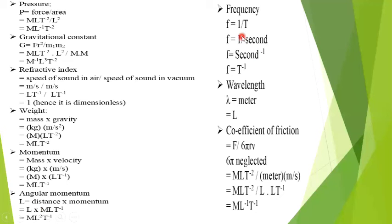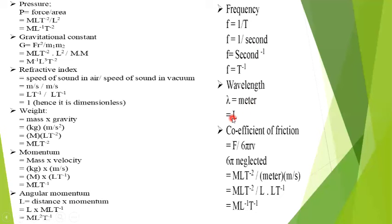We work on frequency. The frequency formula is 1 upon time. Time unit is second; taking its power gives T⁻¹. The frequency dimension is T⁻¹. Same goes for wavelength — wavelength has no specific formula, but since it is a length, its unit is meter and symbol is capital L. So wavelength dimension is L.